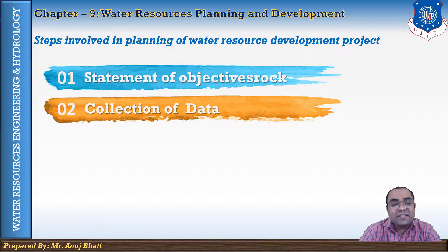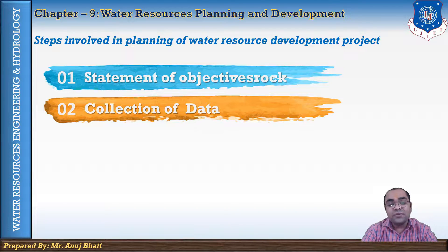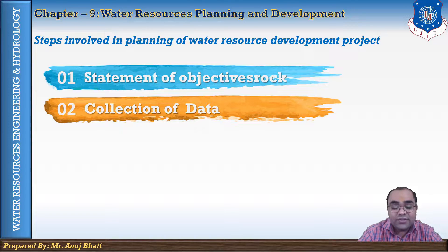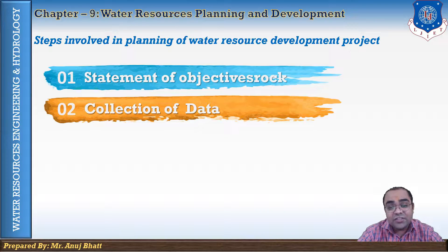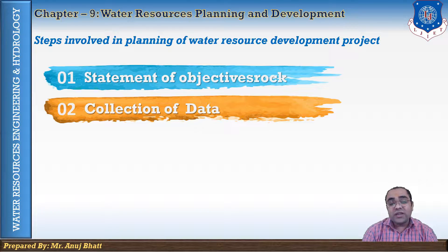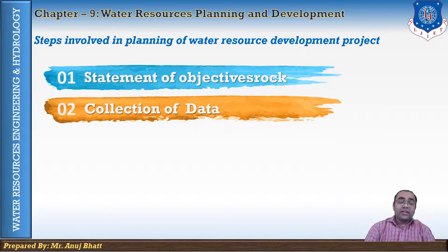For a realistic and accurate planning it is essential that the collection of data should be reliable. The general data we need to collect includes: first, physical data — location, size, physiography, climatic history, and population. Second, hydrological data — precipitation amount, evaporation, transpiration, sedimentation, and the water quality of that particular area.